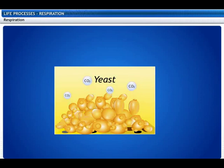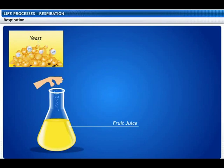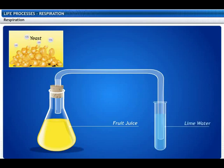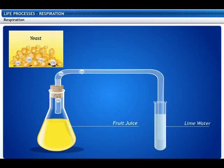Even microorganisms release carbon dioxide. Take some fruit juice in a flask and add some yeast to it. Fit the flask with a one-holed cork and a bent glass tube, dipping the free end into a test tube containing lime water. You will find that the lime water turns milky, demonstrating that microorganisms release carbon dioxide. Yeast acted on the sugar present in the fruit juice and released carbon dioxide. This process is called fermentation.